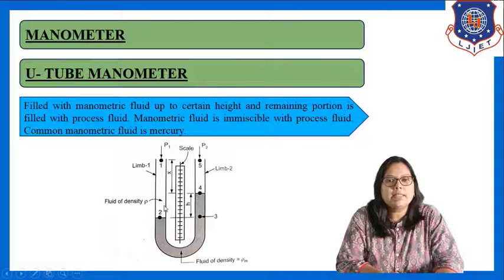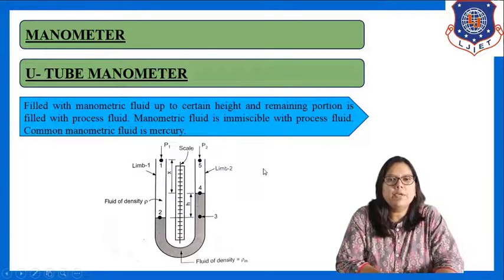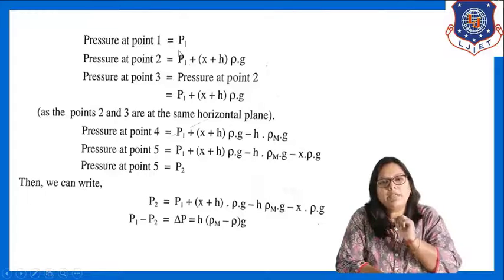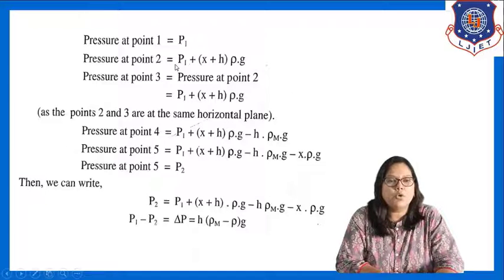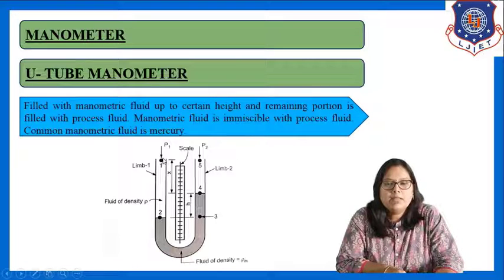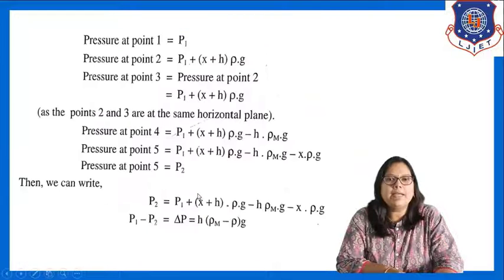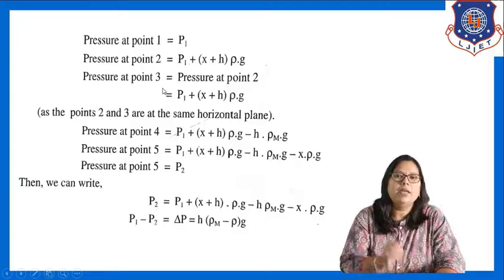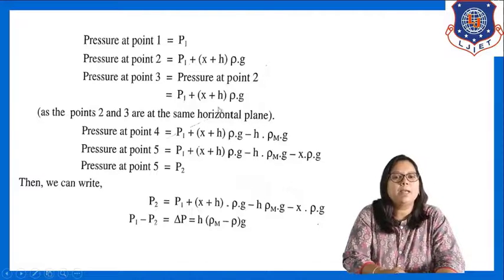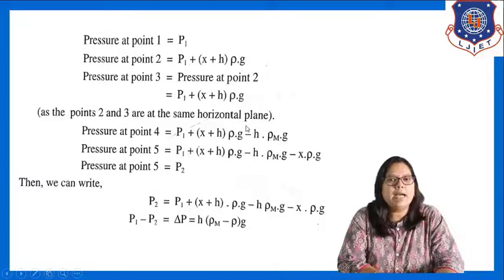I have to write the pressure at different points: 1, 2, 3, 4, and 5. Pressure at point 1 is P1. Pressure at point 2 is P1 plus (x plus h) rho g, because the height between point 1 and 2 is (x + h) and the pressure head equation is h·rho·g. Pressure at point 3 equals pressure at point 2, since they are at the same horizontal level, so pressure at point 3 is P1 + (x + h)·rho·g.